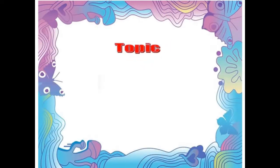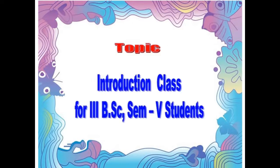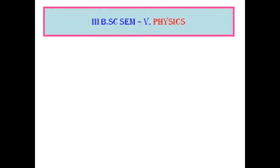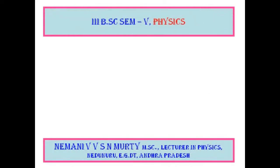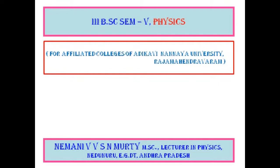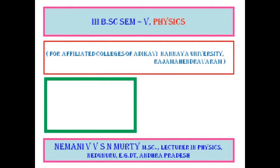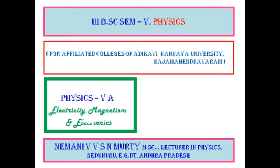This is the introduction class for 3rd B.S.E. Semester 5 students. The physics paper 5 consists of two parts: Physics 5A is Electricity, Magnetism and Electronics, and Physics 5B is Modern Physics.